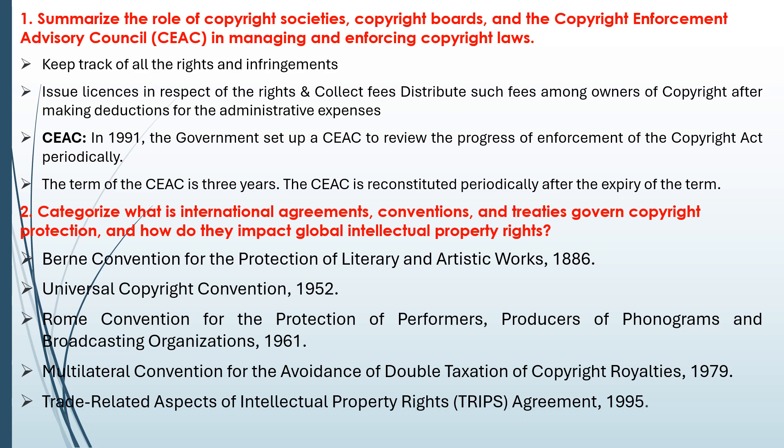Moving on to the next question: categorize the international agreements, conventions, and treaties that govern copyright protection and how they impact global intellectual property rights. Key conventions include: the Berne Convention (1886) for protection of literary and artistic works, the Universal Copyright Convention (1952), the Rome Convention (1961) for protection of performers, and further treaties in 1979 and 1995. Within every 10 to 15 years, international treaties have been monitoring protections and rights for copyright.